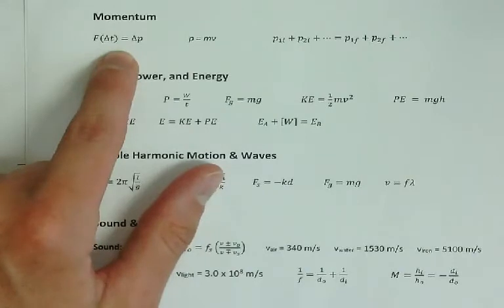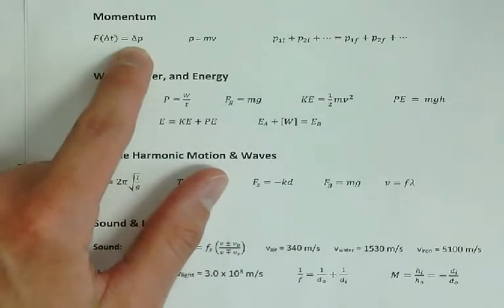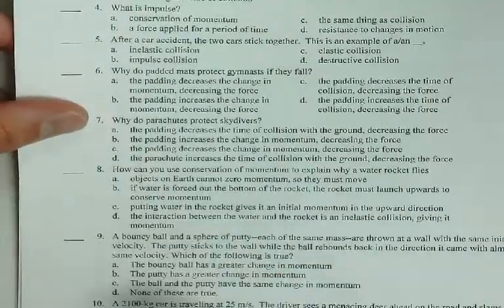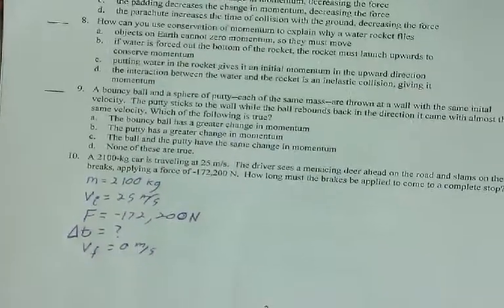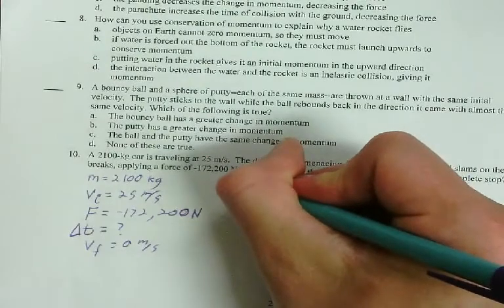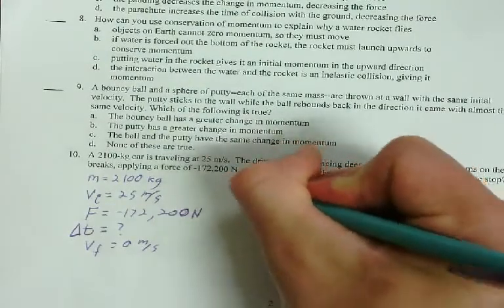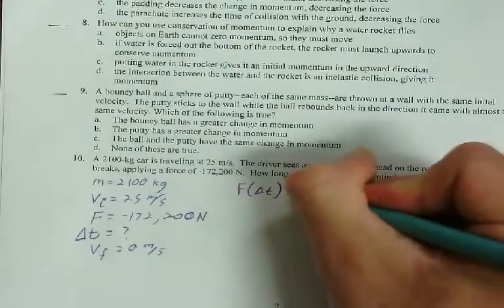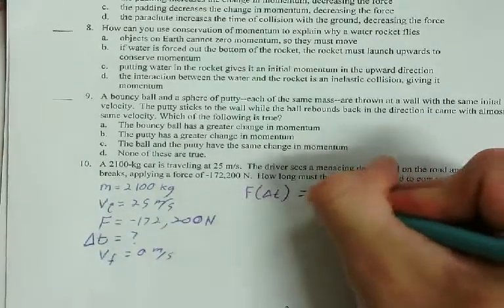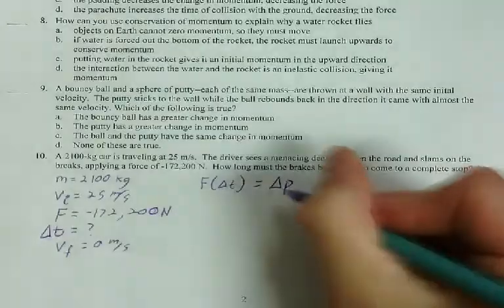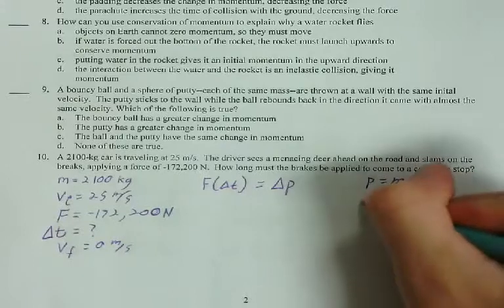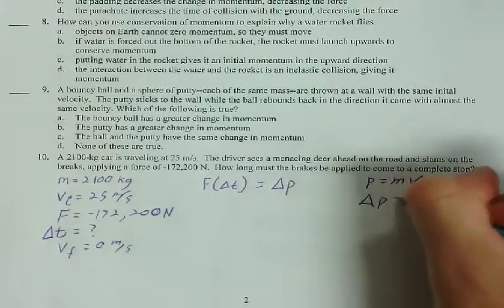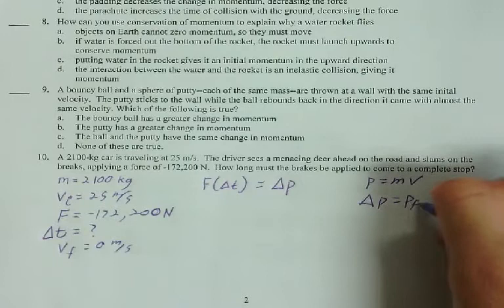So, F delta T. Delta T is just the time. Delta P. So, this is the equation we're going to use. I'll go ahead and write this as delta T since that's the way it's in the equation. So, F delta T equals delta P. And just as a friendly neighborhood reminder, the way you find P is P equals MV. And delta just means change in. So, it's final minus initial.